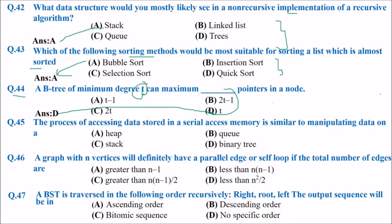The process of accessing data stored in a serial access memory is similar to manipulating data on a — is it a heap, stack, queue, or binary tree? The answer is a stack. Accessing data stored in serial access memory is exactly similar to manipulating data on a stack.